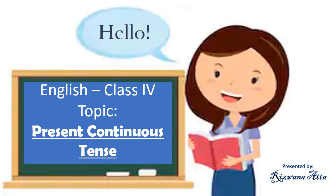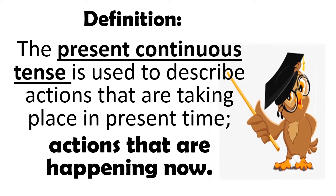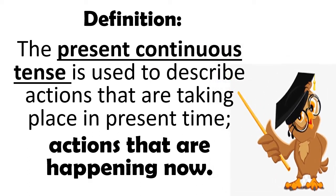Hello students. Today's topic is present continuous tense, presented by Mr. Zanatta. The present continuous tense is used to describe actions that are taking place in the present time — actions that are happening now. It is used to express ongoing action at the time of speaking or writing.